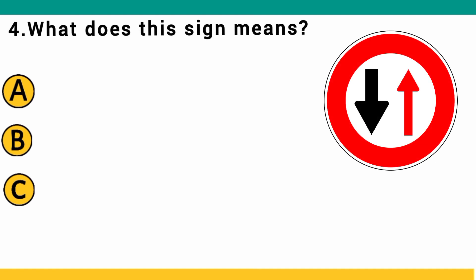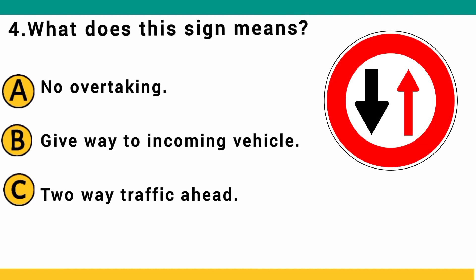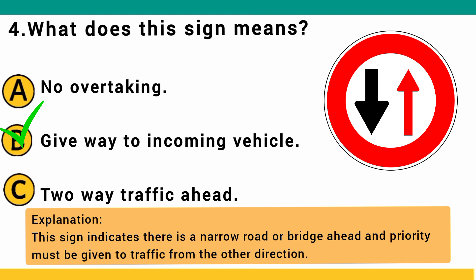What does this sign mean? A) no overtaking, B) give way to incoming vehicle, C) wait for traffic ahead. The correct answer is B: give way to incoming vehicle. This sign indicates there is a narrow road or bridge ahead and priority must be given to traffic from the other direction.